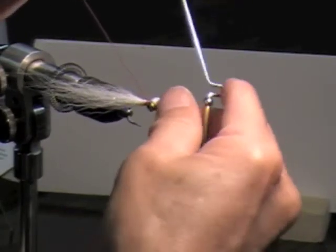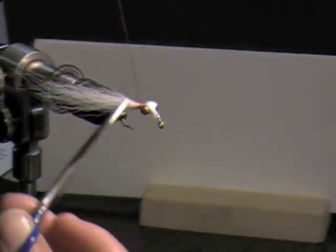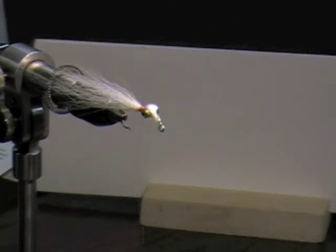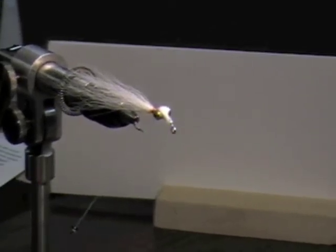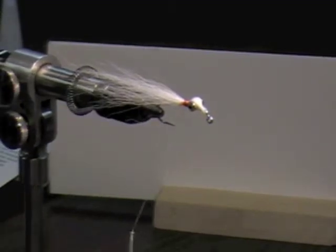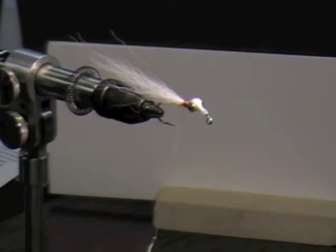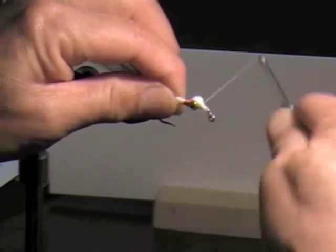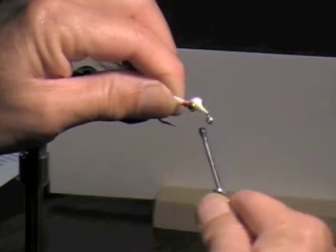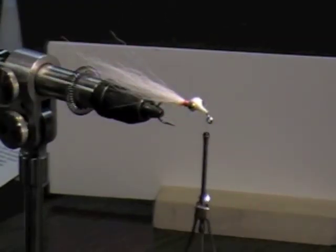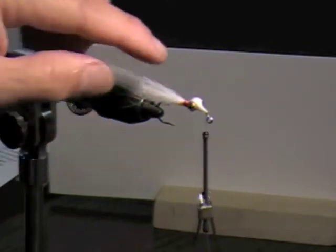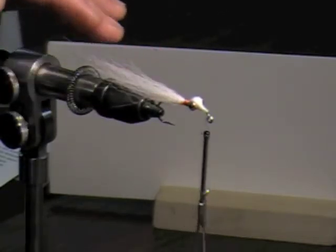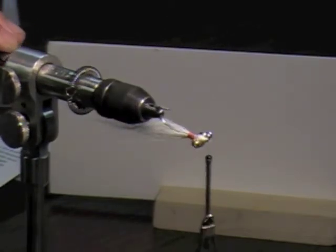Now at this point you can put some head cement. I don't usually use the head cement because I normally epoxy this afterwards. Should have tied it off. But anyway basically what you're looking at is the fly with all the hair tied on the top of the hook right now but as you turn it over it's going to become the bottom.